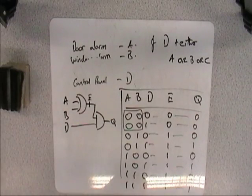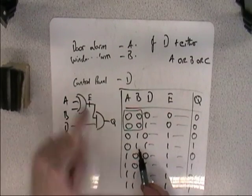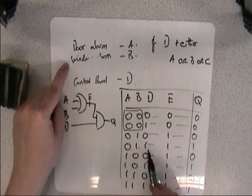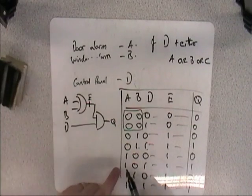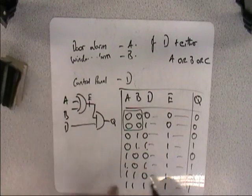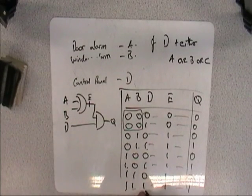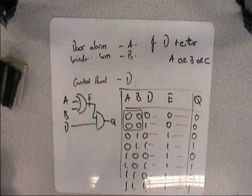So the only three, if you think about it logically, the only three cases where the alarm would come on are if the window alarm, which is B, is going off and the control panel's been set to on, if the door alarm is going off and the control panel's been set to on, or if both alarms have been triggered and the alarm itself is set to on. Those are the only three cases, and that works, that makes sense.